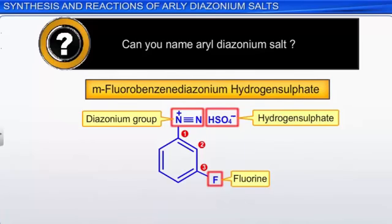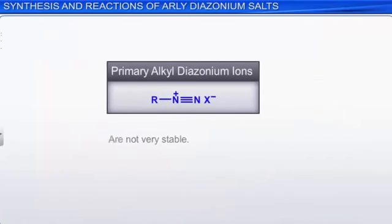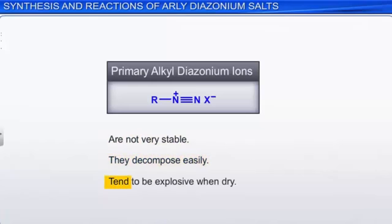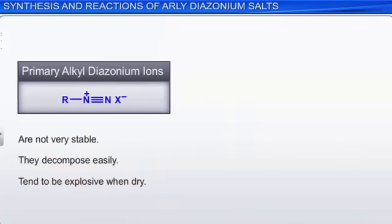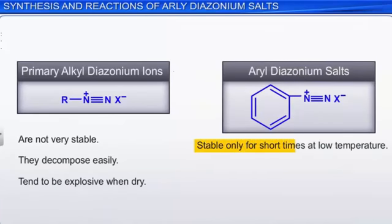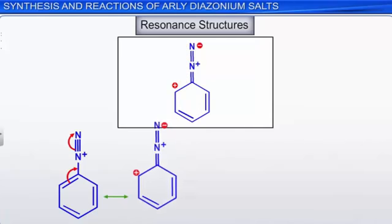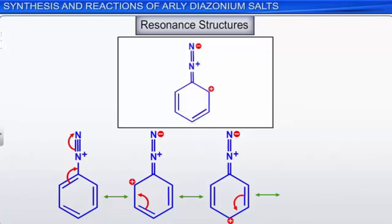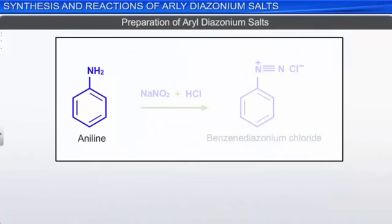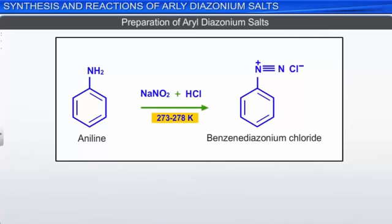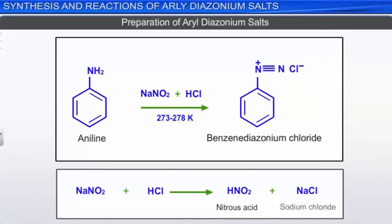Primary alkyl diazonium ions are not very stable — they decompose easily and tend to be explosive when dry. Aryl diazonium salts are stable only for short times at low temperatures. Resonance structures help to stabilize the ion by delocalizing the positive charge around the aromatic ring. To prepare aryl diazonium salts, aniline is reacted with nitrous acid at 273 to 278 Kelvin. The nitrous acid is generated in situ by the reaction of sodium nitrite with hydrochloric acid. Due to the low stability of the diazonium salt, it must be used immediately after preparation.